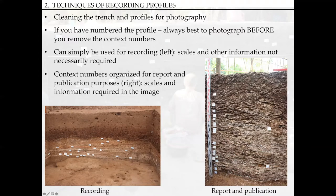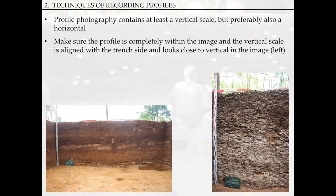On the right-hand side, we've organized the context numbers down through the deposits, added in the scales — and this could be used as a record shot that would go into a report. On the left-hand side here, the numbers have been removed from the profiles, scales and the information board have been added, and the profiles and the base of the trench are nice and clean and ready for photography. We can photograph that profile, and you can see we've made sure we can get the whole profile into the photograph.